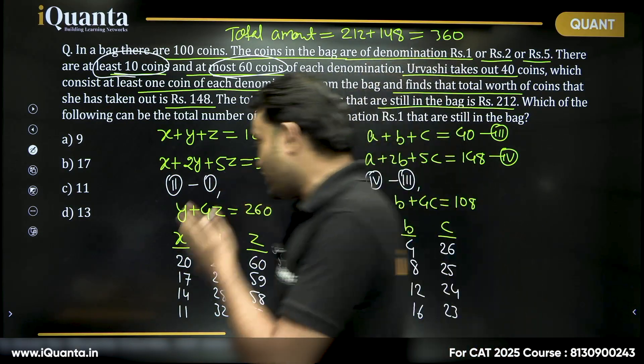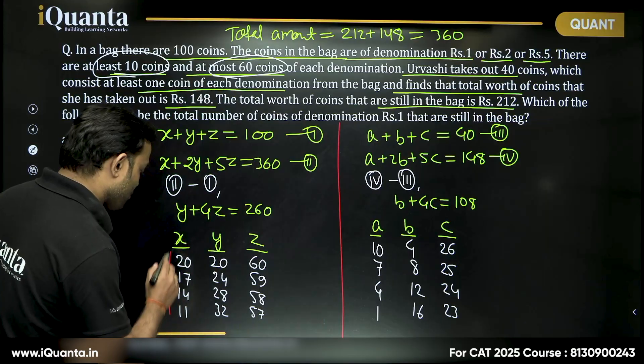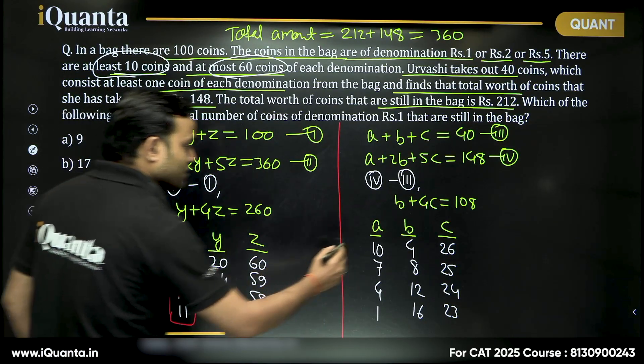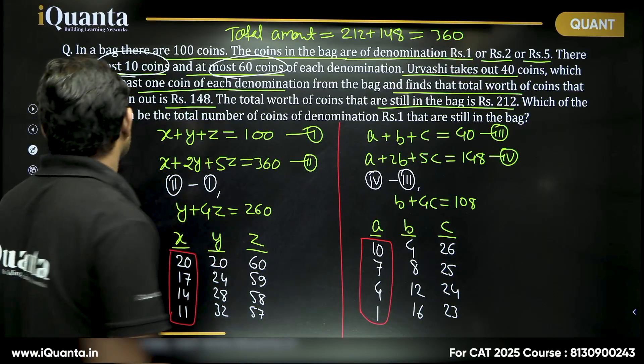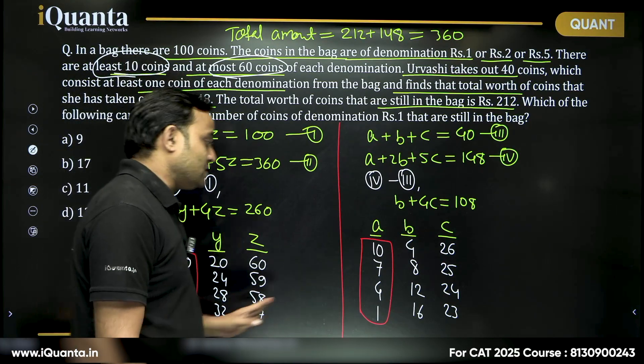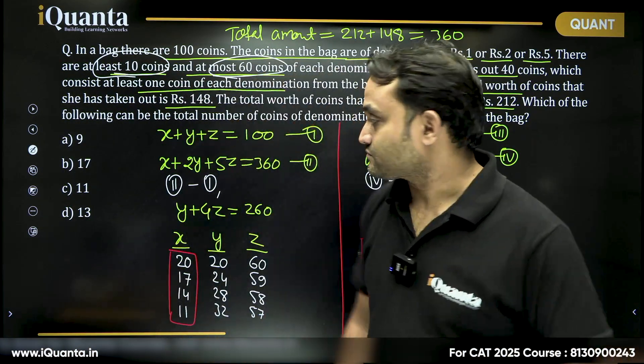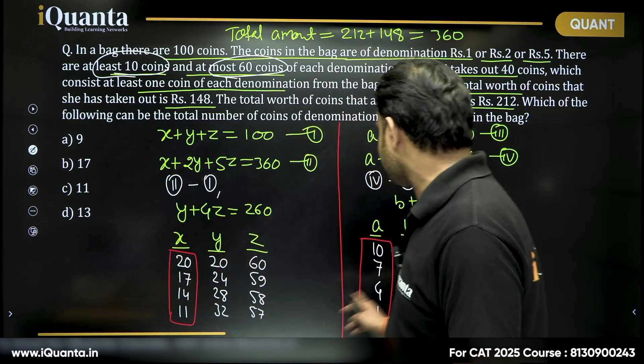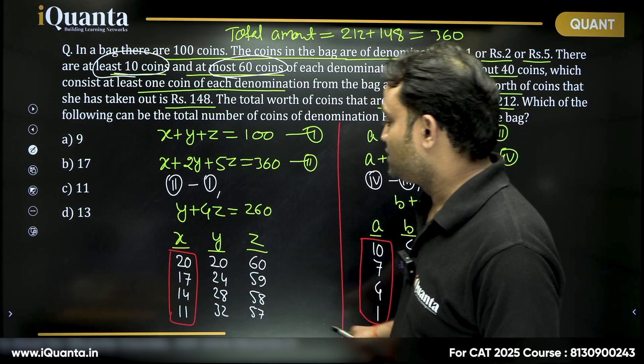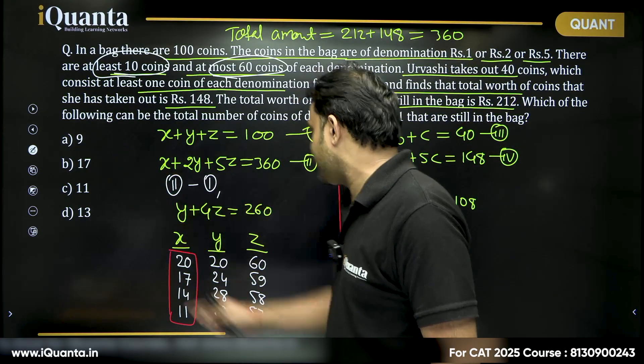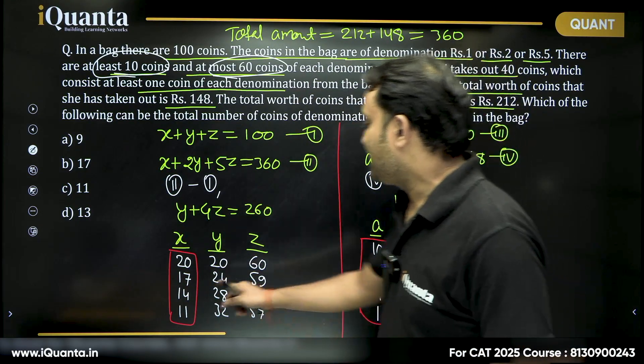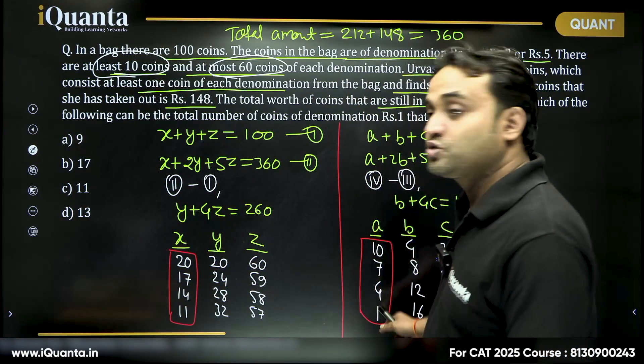Let us try to check if one value out of these 4 and one value out of these 4 gives us a difference of 9 because this is the total and this has been taken out. 9, 20 minus 9 is 11, there is no 11 here. 17 minus 9 is 8, there is no 8 here. 14 minus 9 is 5, there is no 5 here. 11 minus 9 is 2, there is no 2 here.